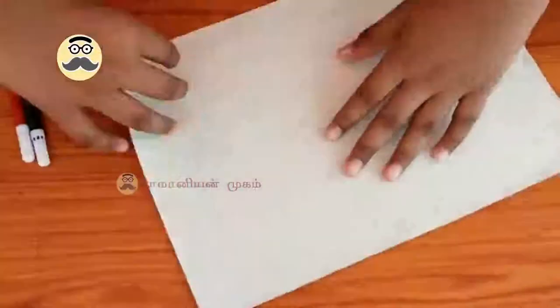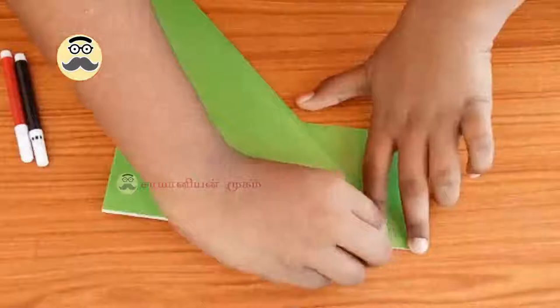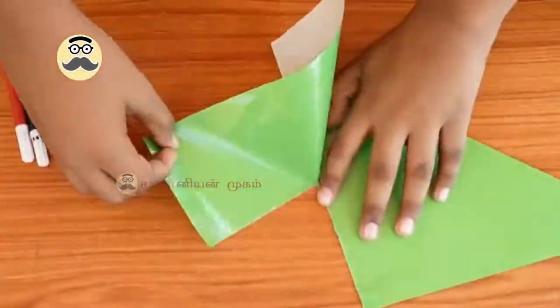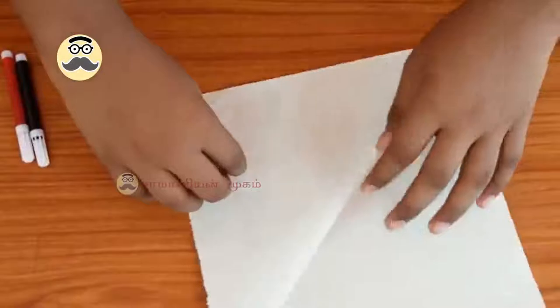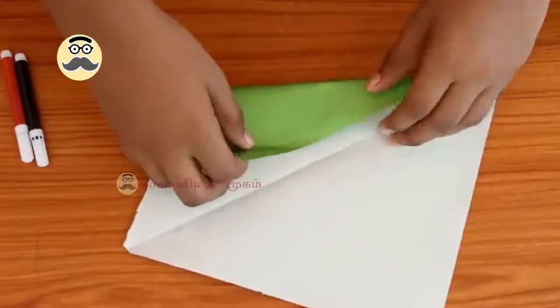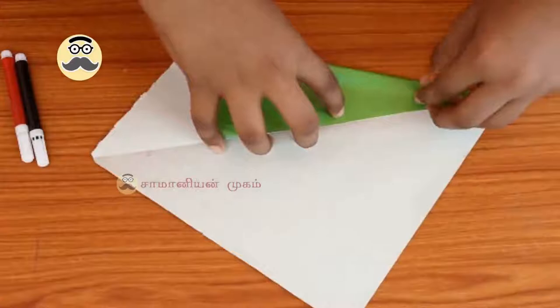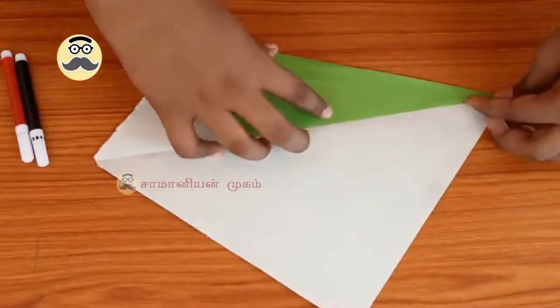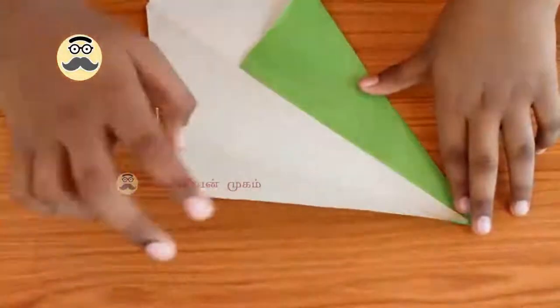First we need an F4 size green color paper. Then open it, now we have a straight line. Now fold this end to this line like a rocket. Then do the same for this end also.